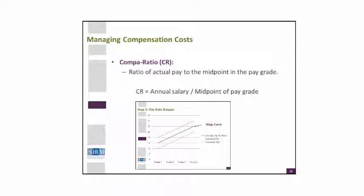I go back to a slide from week three, when we were looking at establishing pay rates and ranges. The wage curve was information obtained via survey data of the market and other sources that you could gather to establish your grades and your ranges — a minimum range and a maximum range represented by those two dotted lines. Then you think about establishing where the midpoint is.